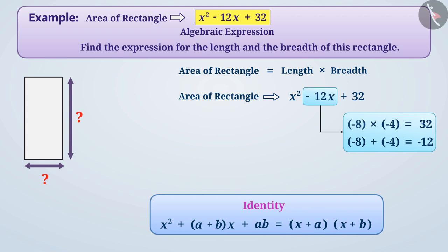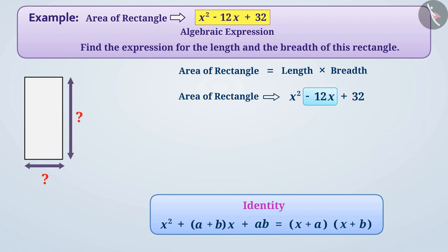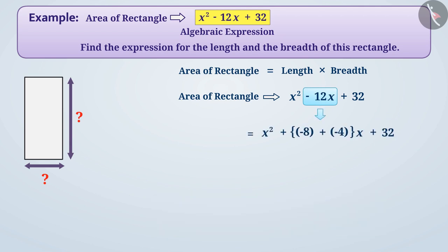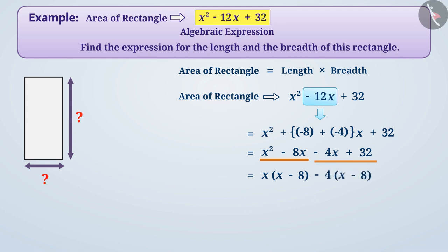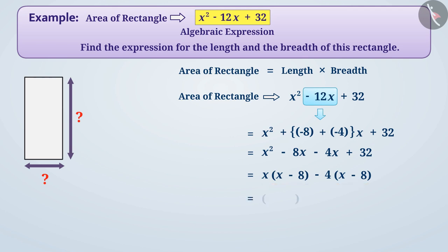Now, the middle term -12x can be written as -8x - 4x. We take x common from the first two terms and -4 common from the last two terms. Then we take (x - 8) as a common factor from both terms, giving the factorization of the expression as (x - 8)(x - 4).